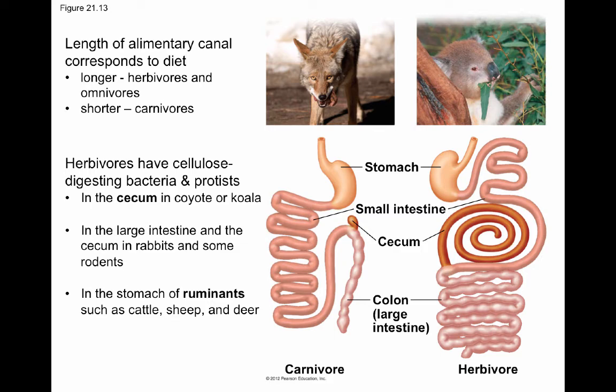Ruminants like cattle, sheep, and deer have multiple stomachs where different breakdown happens. They also produce cud — the food is chewed, goes down into the digestive system, gets broken down, then comes back up into the mouth for further mechanical digestion, then goes back down again into the system.